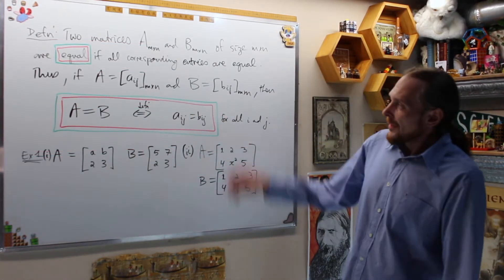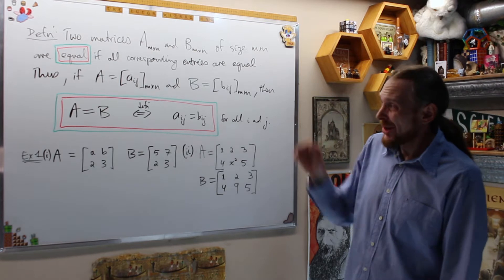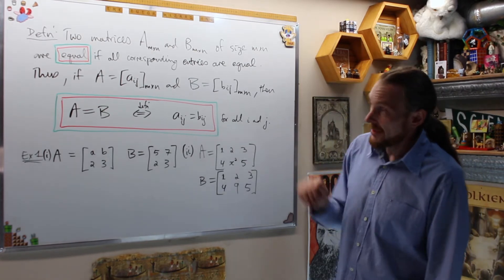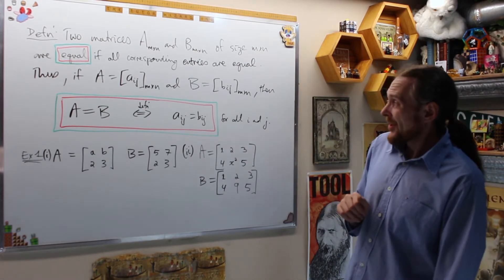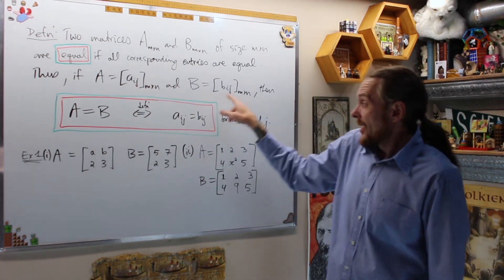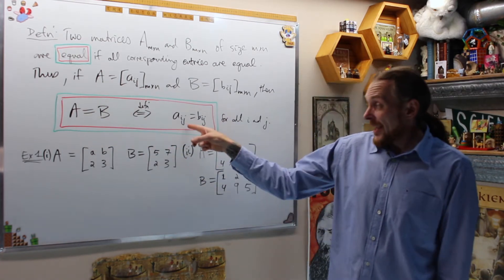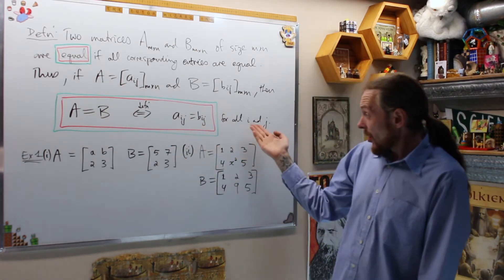Okay for our first definition we've got two matrices A and B of size M by N are equal if and only if all corresponding entries are equal. Thus, if we denote A by Aij and B by Bij, A equals B if and only if Aij equals Bij for all i and j.